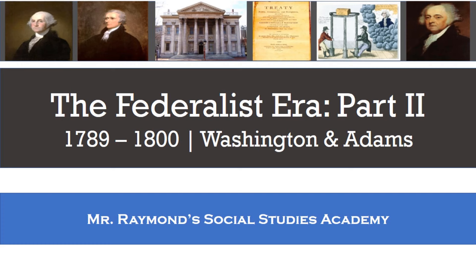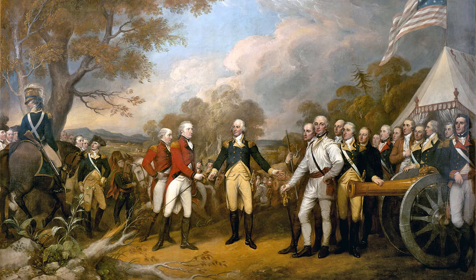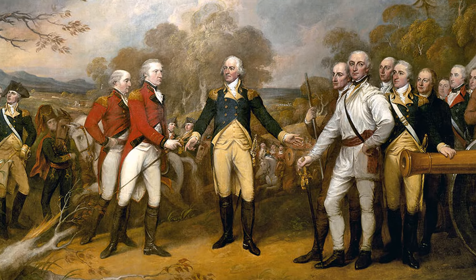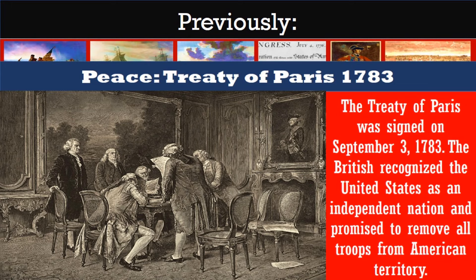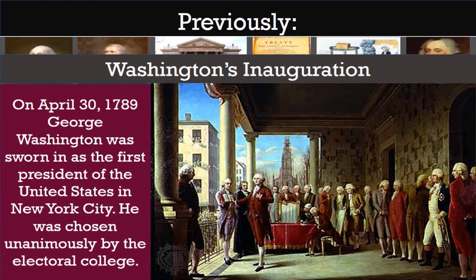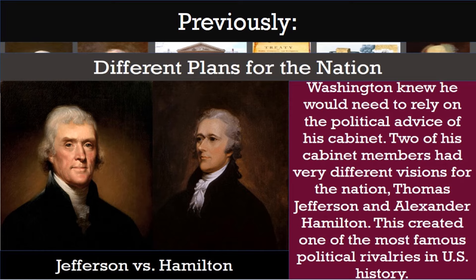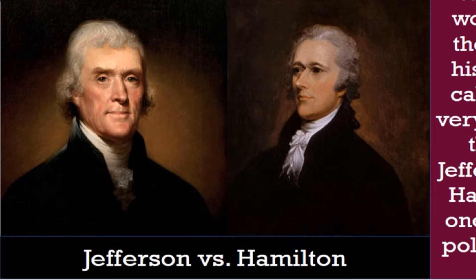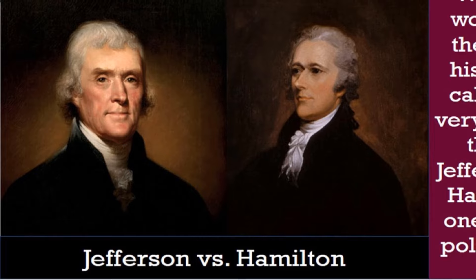Welcome back to Mr. Raymond's Social Studies Academy, where today we will look at part two of the Federalist Era covering the presidencies of George Washington and John Adams. In previous lessons we learned how the United States won their independence from Britain with the Treaty of Paris, but today we'll see how European nations including the British were not ready to give up on North America. Last time we looked at the newly created executive branch with President George Washington sworn in in 1789 in New York City, and we saw how two members of his cabinet, Thomas Jefferson and Alexander Hamilton, had very different visions for how the United States should be run.